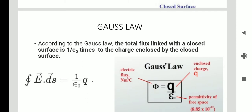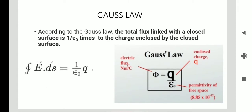According to Gauss's law, the total flux linked with a closed surface is (1/ε₀) times the charge enclosed by the closed surface. In a closed surface, the total electric flux equals (1/ε₀) times the enclosed charge. The integral form is ∮E·dS = (1/ε₀)·Q, where E is the electric field, S is the surface, and ε₀ is the permittivity of free space.